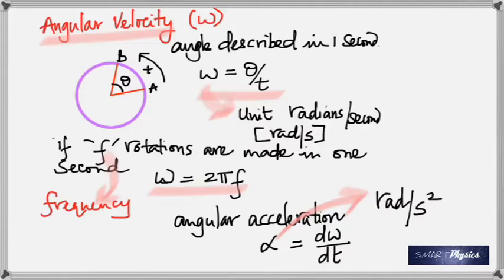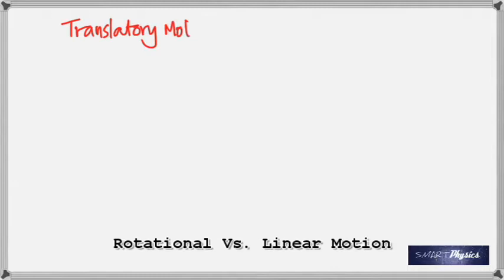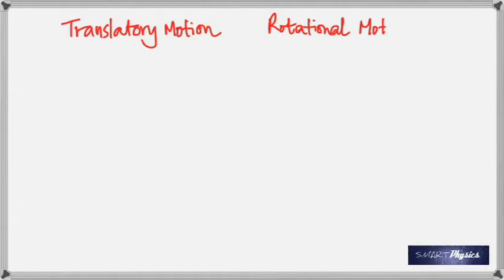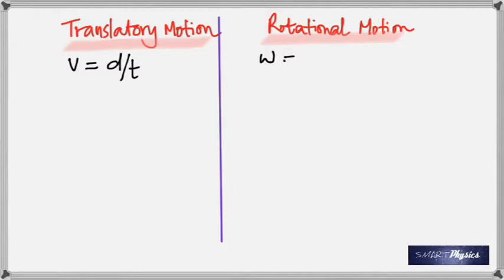Comparing linear and rotational motion: displacement delta-x becomes delta-theta; time remains time; velocity becomes angular velocity omega; linear acceleration becomes angular acceleration alpha. The units match perfectly — meters per second becomes radians per second; meters per second squared becomes radians per second squared. This comparison continues throughout the chapter and makes rotational motion easy since you've already seen linear motion.